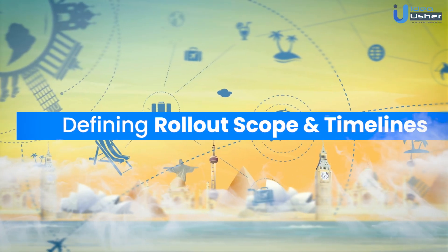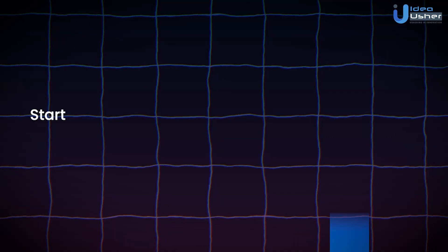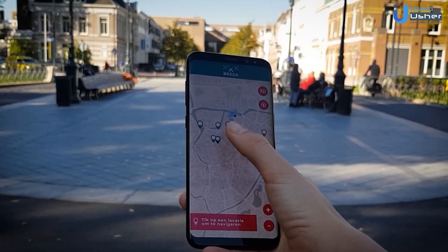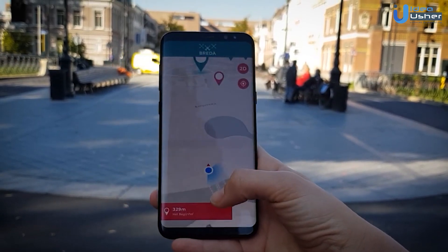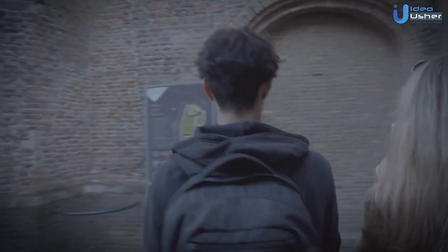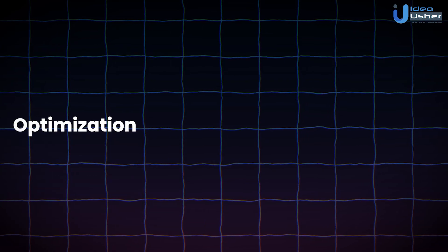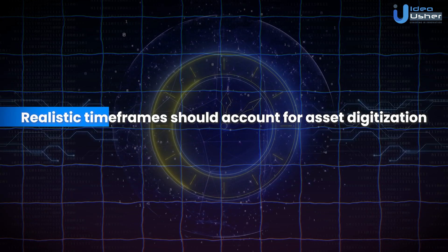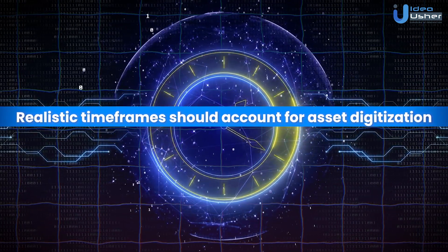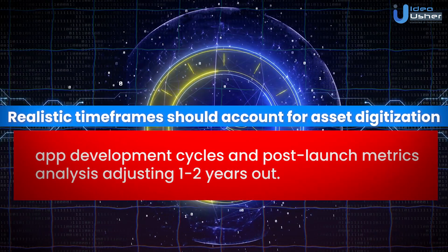Rather than tackling full adoption immediately, start small and then scale sensibly. Audit top visitor touchpoints and consider initial integration into one site section or location only. Within this defined scope, assign phased rollout stages — a modest pilot experience, followed by optimization, then expansion across further sites. Realistic timeframes should account for asset digitization, app development cycles, and post-launch metrics analysis, adjusting one to two years out.